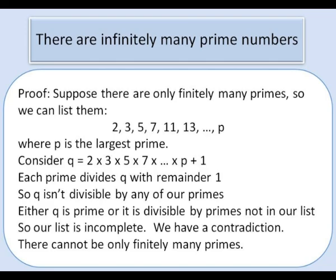So either q is not divisible by any prime number in our list. So either it's a prime number itself, or it's divisible by primes not in our list. But in either case, it requires there'll be prime numbers which are not in our list of all the prime numbers.